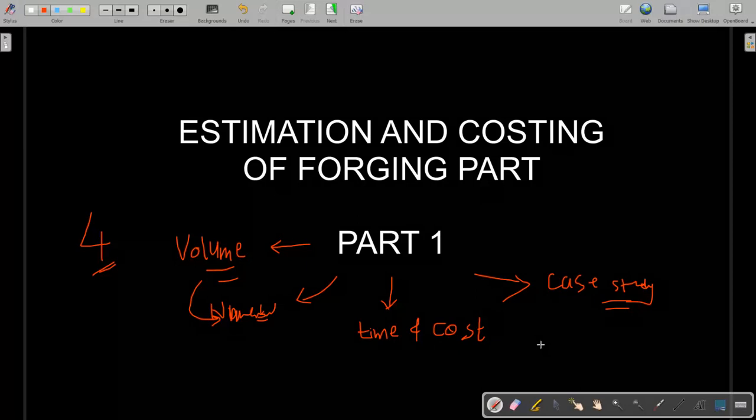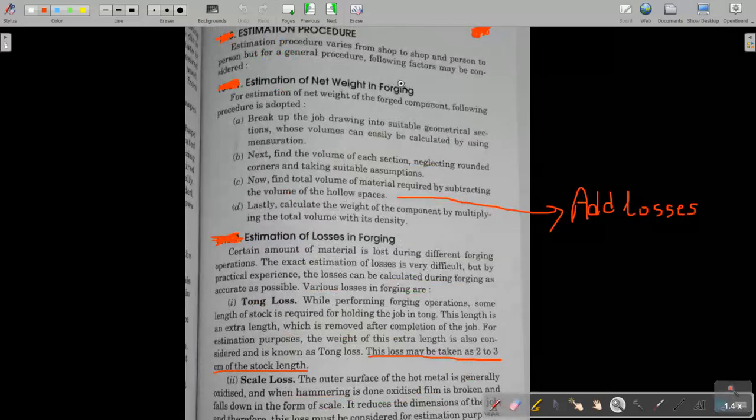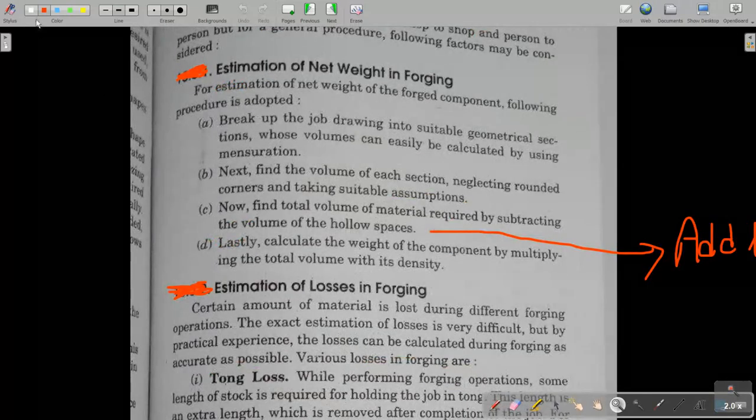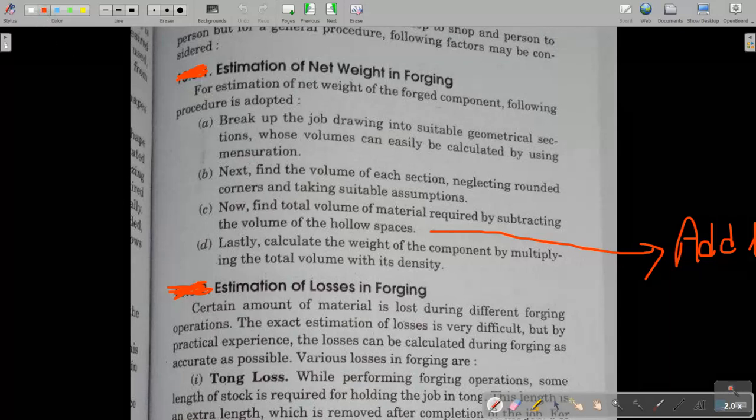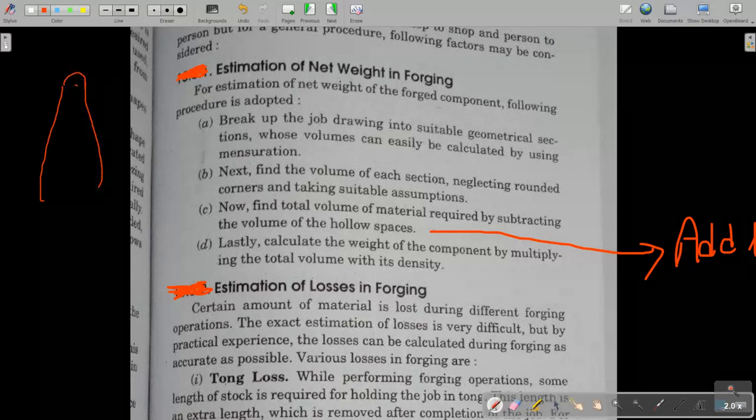So this is part one, let's start. I hope you know what the forging process is. Here basically we have to find first how much material is required volume. So there are some steps to find out the net weight. For example, if you want to forge a connecting rod, it will be shaped like this. I'm drawing rough, not exactly, but it may be like this. There are some pockets also. This is the connecting rod.